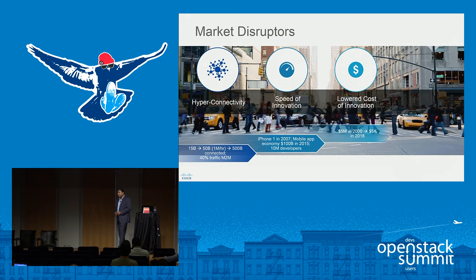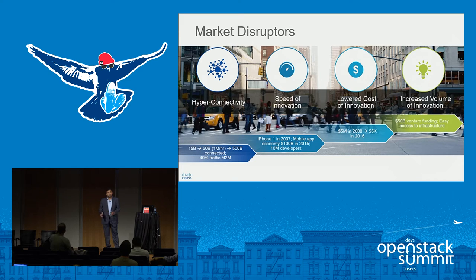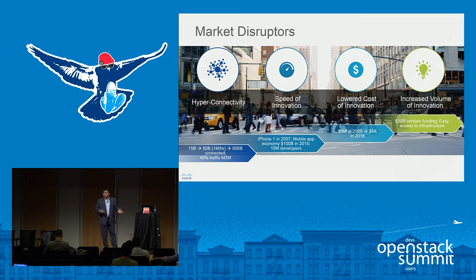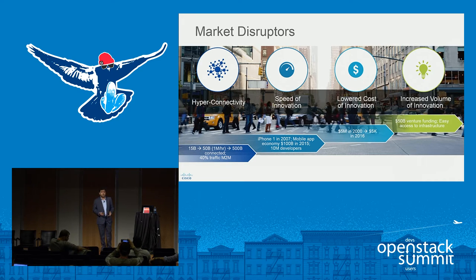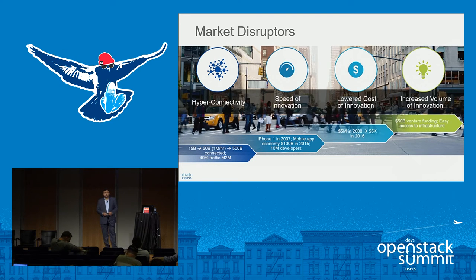In the service provider and telco arena, a lot of disruptions are happening — some of them continual. Four key themes that we identify. Hyperconnectivity: all of us have iPhones, iPads, tablets, smartphones — a lot of things getting connected to the network. 15 billion to 50 billion devices in the next few years, going to 500 billion. Among these, 40% of devices are just going to be traffic for M2M — and that's huge. A lot of traffic through the networks puts a huge load and a huge change on a service provider's network.